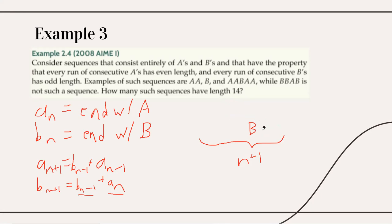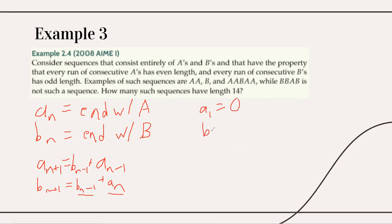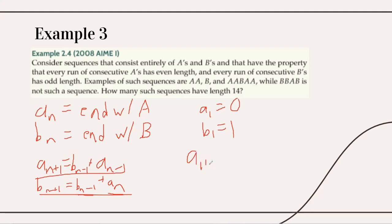Once we have these equations, we find the base cases: a(1) = 0, since a single 'a' is odd-length and violates the condition; b(1) = 1, since a single 'b' is valid. We then calculate successive values. Applying the formulas through n=14, we get a(14) = 80 and b(14) = 92. Since they ask for any sequence of length 14 — ending in either 'a' or 'b' — the answer is a(14) + b(14) = 80 + 92 = 172.